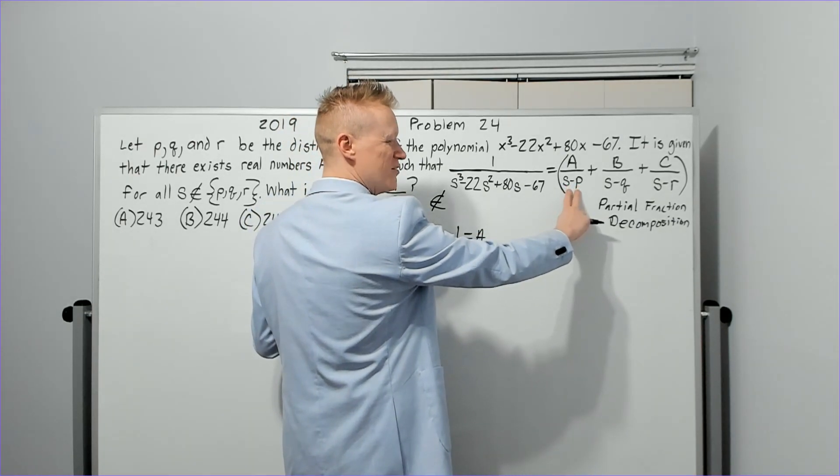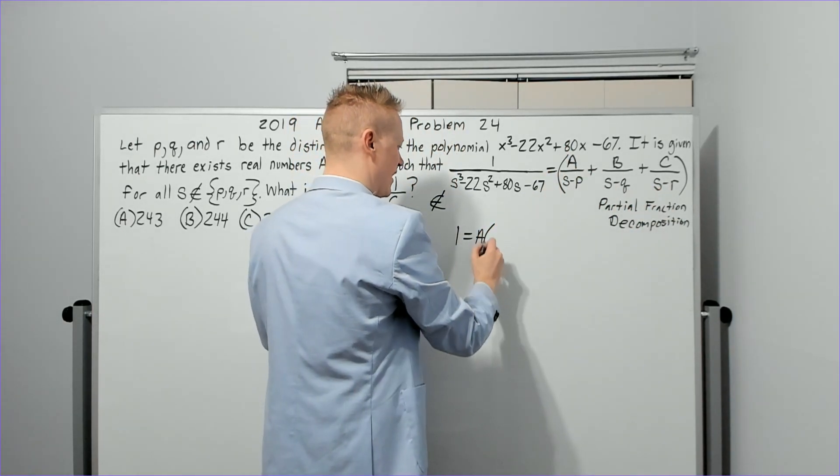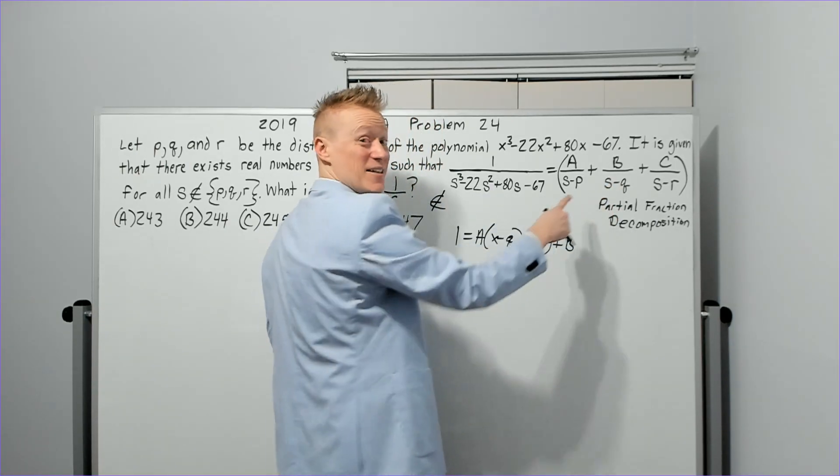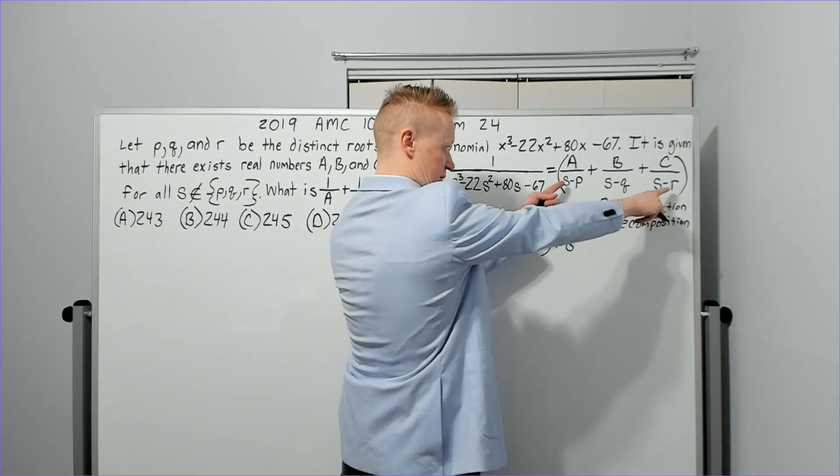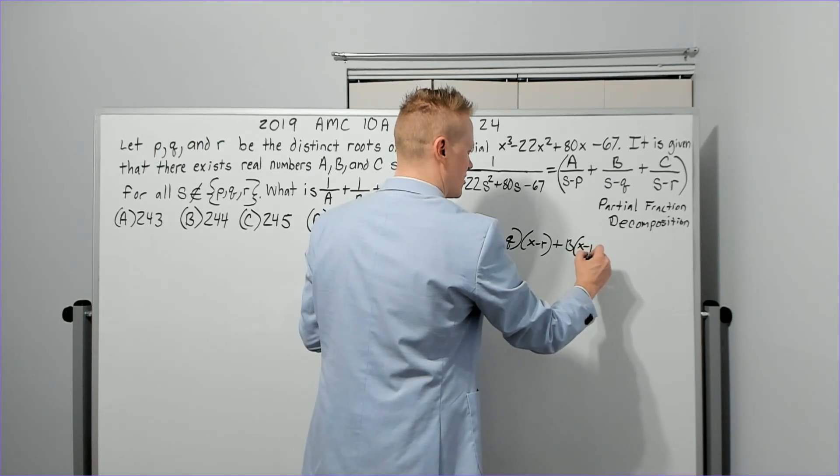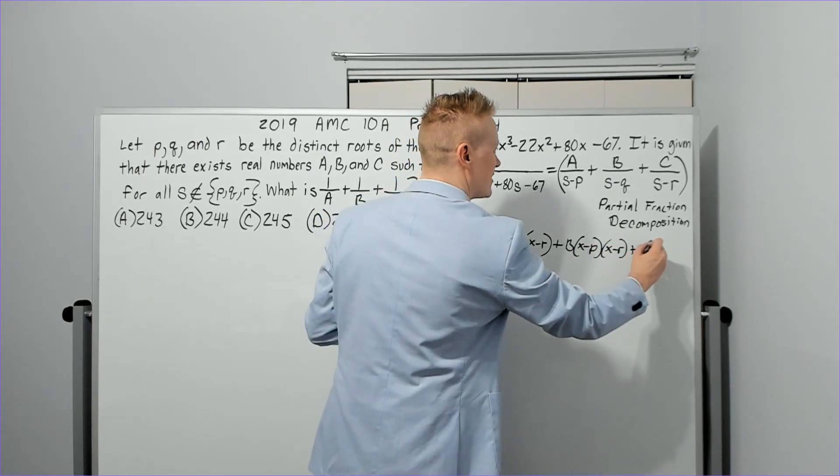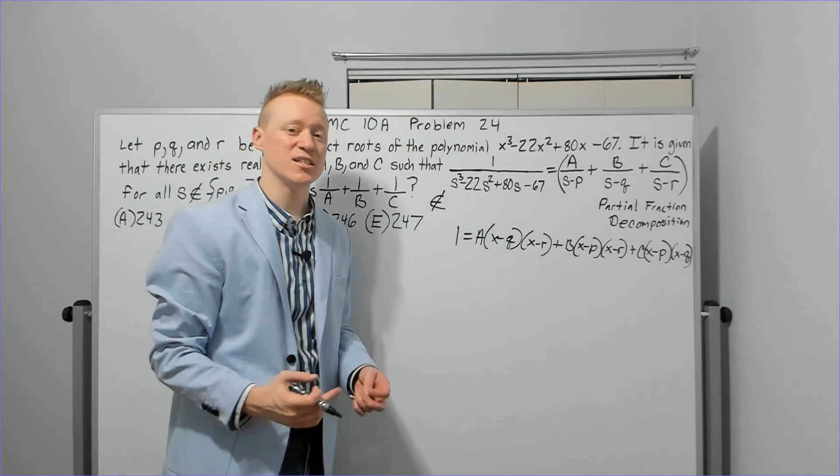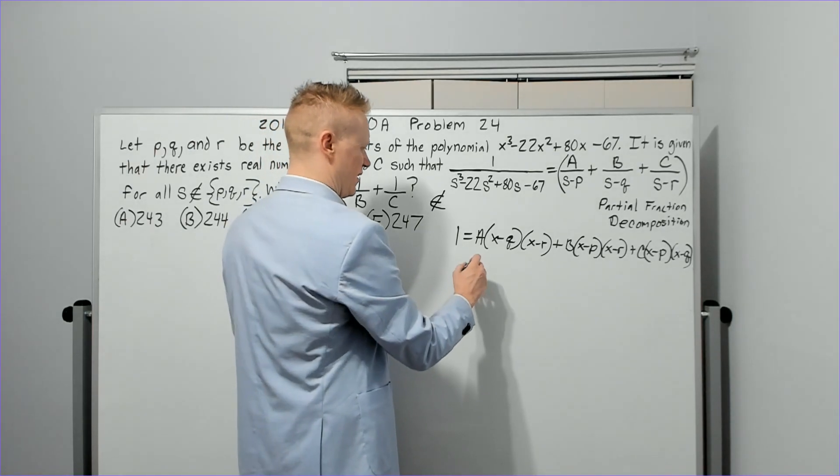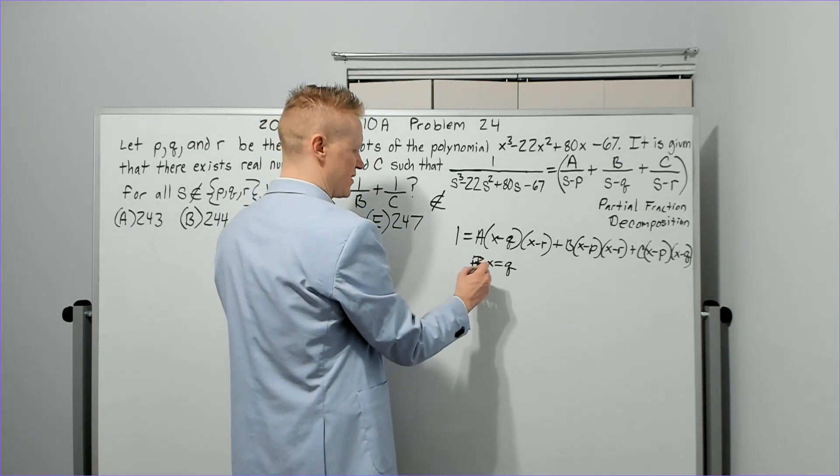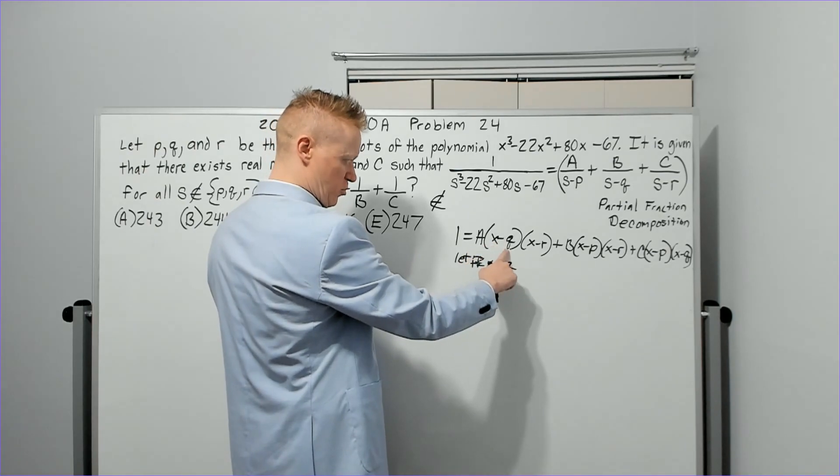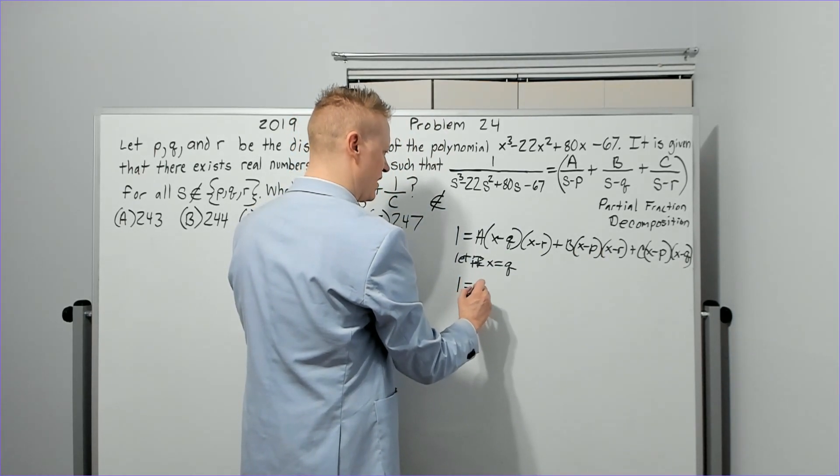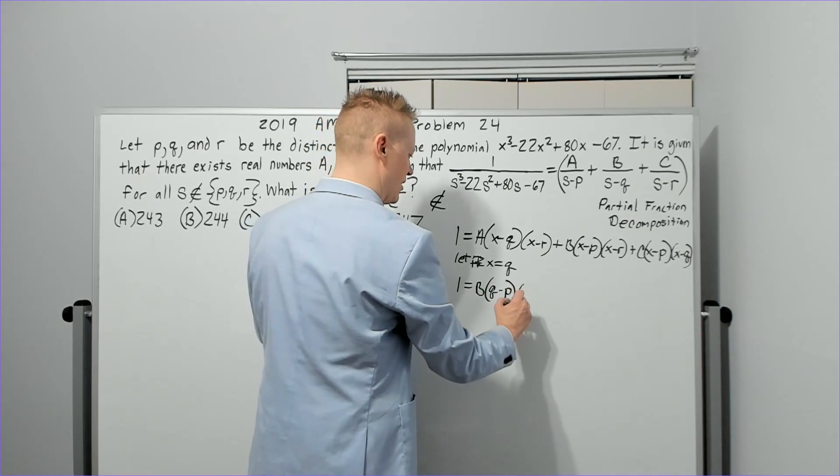You're going to get 1 equals A times, and just like all three of these are multiplying the entire side, one of the factors is going to cancel. Also, I'm going to make a substitution here. I'm going to go back to using x. I don't want to use s. It looks like a 5 when you're writing. If you're space writing quickly, it's just better to use x in my opinion. There's probably a reason they did this, but we're not worried about that right now. So, we're just going to toss an x back in. Now, the x minus p term would have canceled here, but these two would not have canceled with the A term. So, we're going to get A times x minus q times x minus r plus the B, and now the x minus q term would cancel, but these two denominator terms would not cancel when we distributed. And so, you would get B times x minus p times x minus r, and finally C times x minus p x minus q.